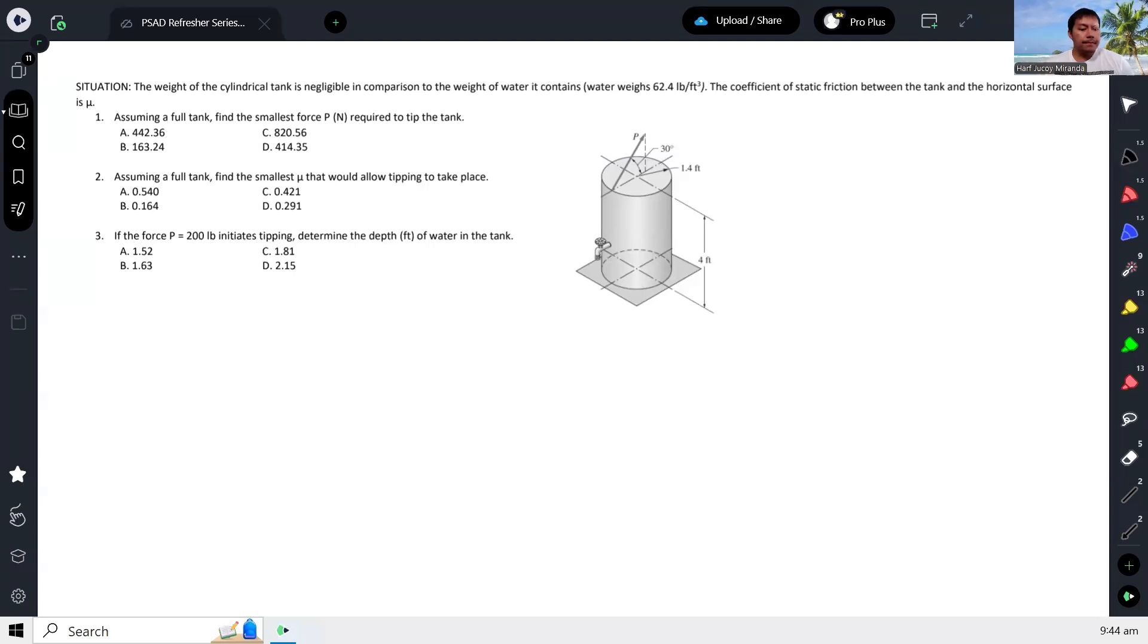Okay, next problem. The weight of the cylindrical tank is negligible in comparison to the weight of water it contains. Note that water weighs 62.4 pounds per cubic foot. The coefficient of friction between the tank and horizontal surface is μ. For the first question, assuming a full tank, find the smallest force P required to tip the tank. Number two, assuming a full tank, find the smallest μ that would allow tipping to take place. And number three, if the force P equals 200 pounds initiates tipping, determine the depth of water in the tank.